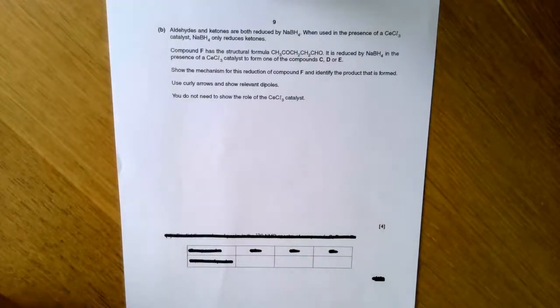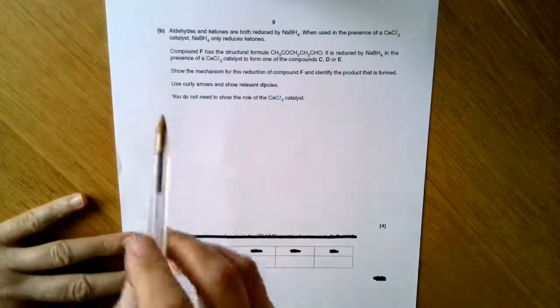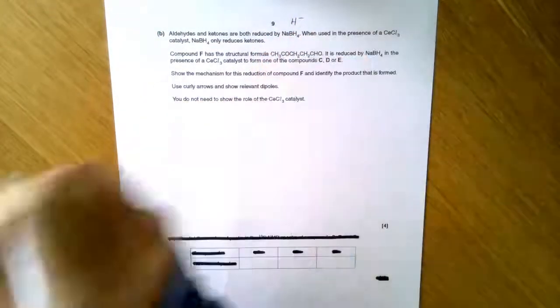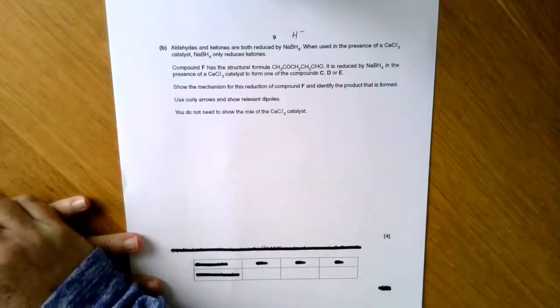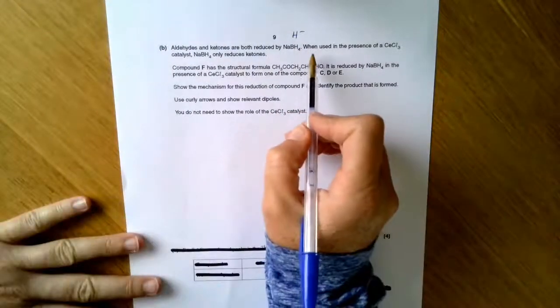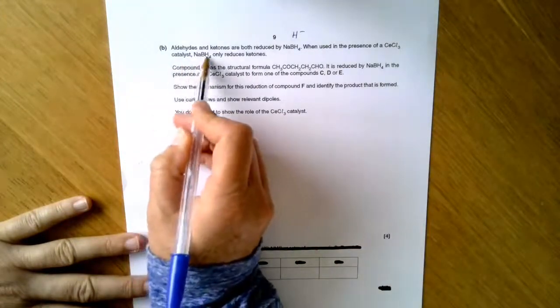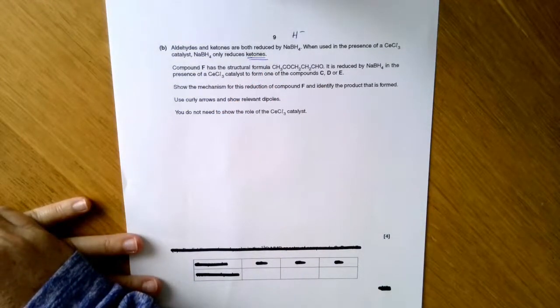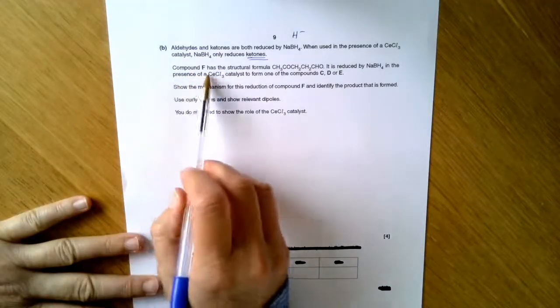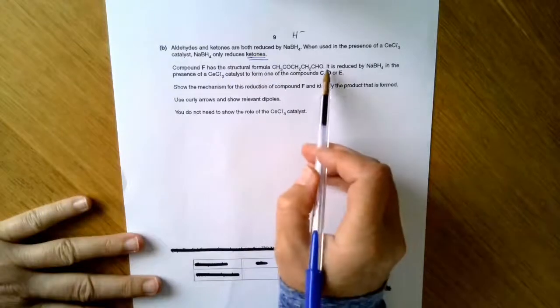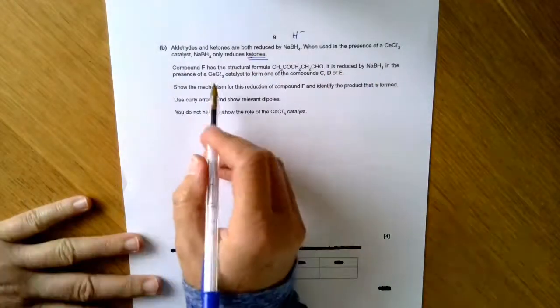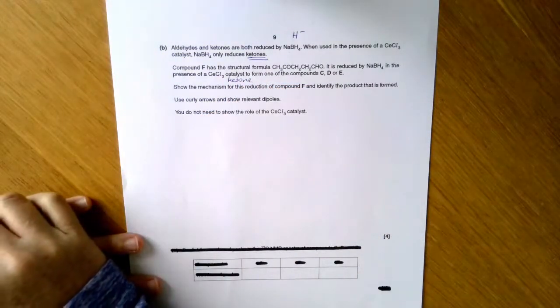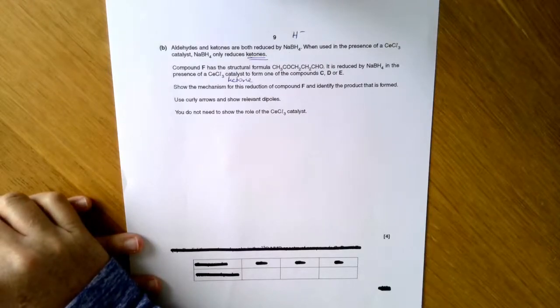Now we're on to the second part of the question. Now there's a bit of information at the beginning of this question that we need to know about. It says aldehydes and ketones are both reduced by NaBH4. Well we know that I hope. When I see that my brain goes, H minus. So I make a note of that when I read NaBH4. When used in the presence of a CeCl3 catalyst, NaBH4 only reduces ketones. So that's something I'm not expected to know. It's a bit of information I've been given. So compound F has the structural formula and then it gives me its formula. It's reduced by NaBH4 in the presence of a CeCl3 catalyst. So that's only going to react with the ketone. I was just told that to form one of C, D, or E.